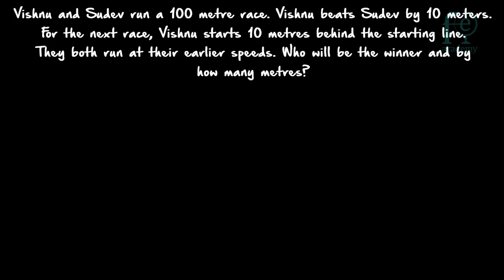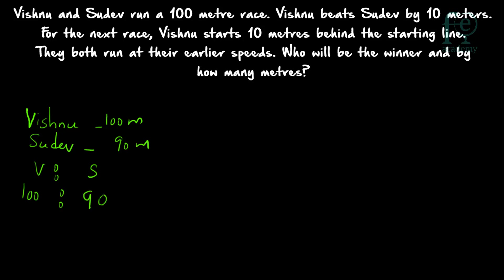Vishnu and Sudev are running a 100 meter race and Vishnu is beating Sudev by 10 meters. What is the meaning of that? When Vishnu completes 100 meters, Sudev will be running only 90 meters. So Vishnu is winning by 10 meters or beating Sudev by 10 meters. So the ratio of Vishnu to Sudev is 100 is to 90.